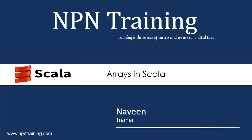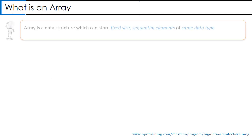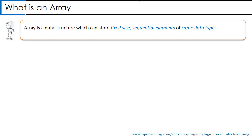In this video I will explain arrays in Scala. First, let us understand what is an array. An array is a data structure which can store fixed size sequential elements of the same data type. Let us understand some important points.